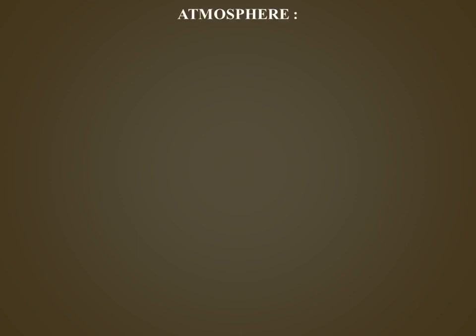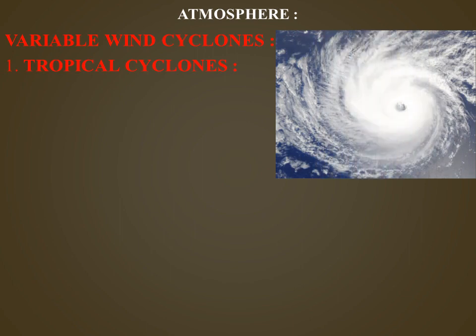Today I am going to explain different types of cyclones. The first one is tropical cyclones. Tropical cyclones are known as cyclones in the Indian Ocean, typhoons in the western Pacific Ocean, hurricanes in the Atlantic and eastern Pacific Ocean, and baguers in the Philippines, and willy-willy in Australia.